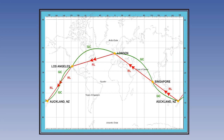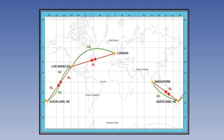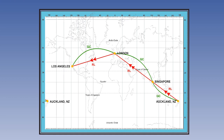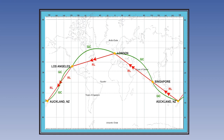Try the same exercise with the other conversion angles. Notice that you have to split a track crossing the equator into two curves, one in the northern hemisphere and the other in the south. But the arithmetic still works for each section.